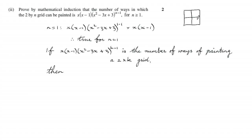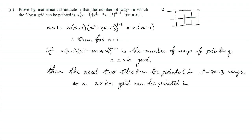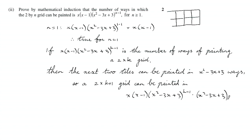In part one we showed that that expression is the number of ways to add two extra tiles. That also works when there's more stuff to the left — the number of ways of painting those two extra tiles is still the same expression. So the next two tiles can be painted in x squared minus 3x plus 3 ways, as shown in part one. Therefore the number of ways to paint a 2-by-(k+1) grid is the number of ways to paint all tiles before it times that factor.